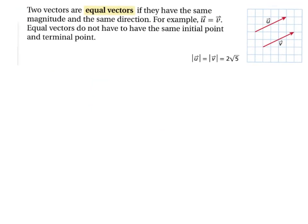Two vectors are equal if they have the same magnitude and the same direction. Equal vectors do not have to have the same initial and terminal points. For example, vectors U and V are equal — using the Pythagorean theorem, 2² + 4² = c² gives √20 = 2√5. Both have a magnitude of 2√5, so they are equal.